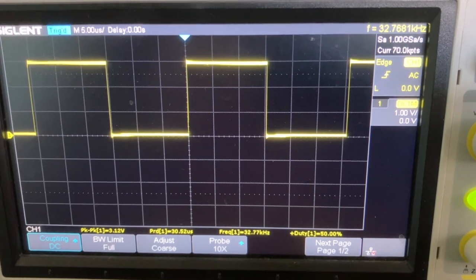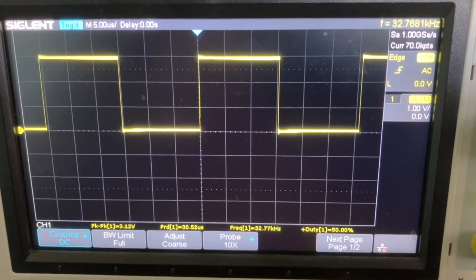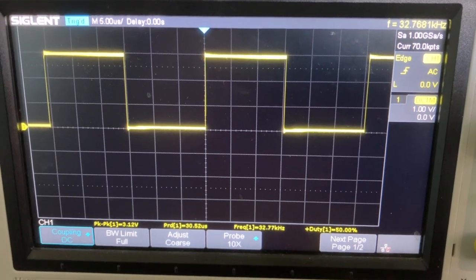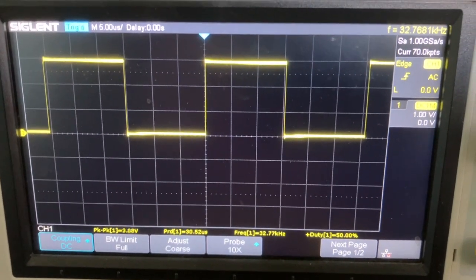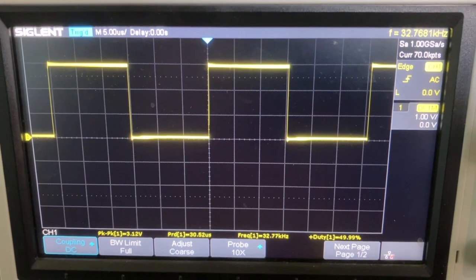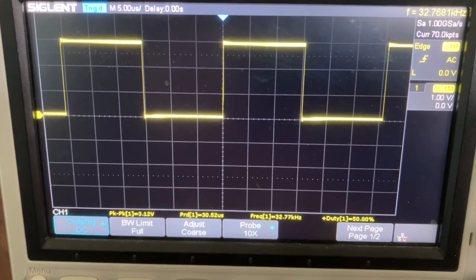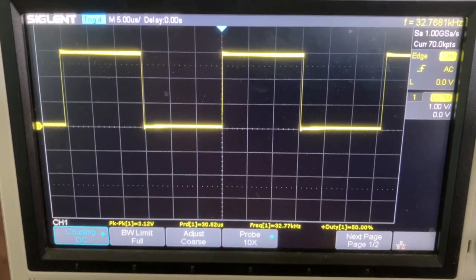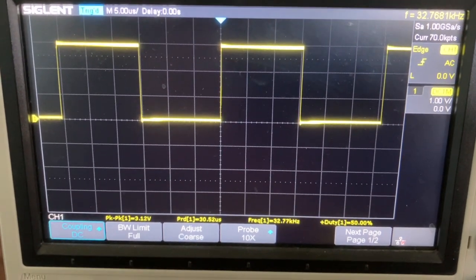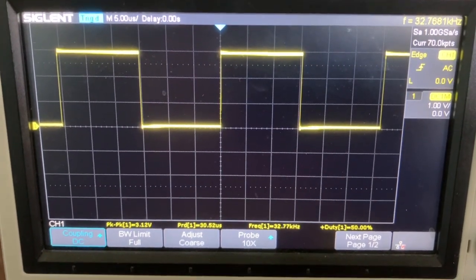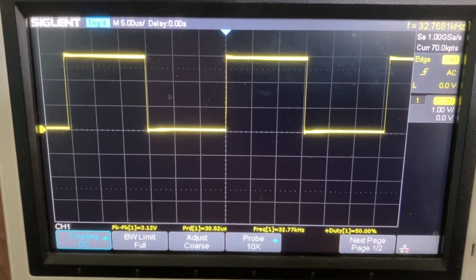And here's the output of our little TCXO module on the scope, 1 volt per division, so we're getting 3 volts out, TTL, nice TTL output. Nice square wave, and 32.768 kHz per the scope. For the frequency, I trust the frequency counter a little bit more than the scope, but yeah. So nice enough, works as advertised.